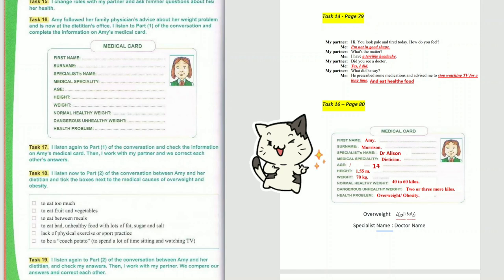Height: 1.55 meters. Weight: 70 kilograms. Normal healthy weight: 40 to 60 kilos. Dangerous unhealthy weight: 2 or 3 more kilos. Health problem: Overweight.